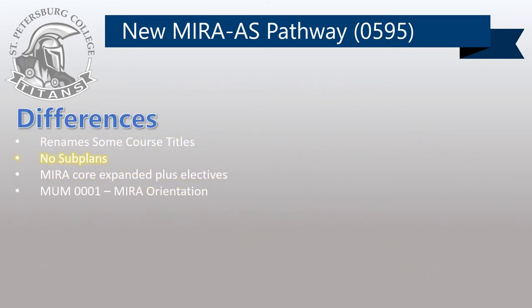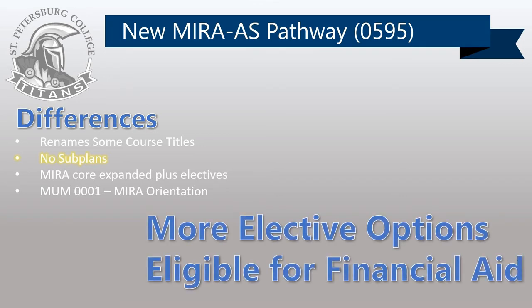Second, the new curriculum consolidates all subplans into one MIRA degree. Students will not formally declare subplan concentrations of production, composition, or performance. This provides students with more options for their nine credits of MIRA electives, which can be eligible within financial aid packages. For example, a former production subplan student can now take songwriting as their MIRA elective within financial aid eligibility. A former composition subplan student can now take mixing or audio technology foundations with financial aid eligibility.